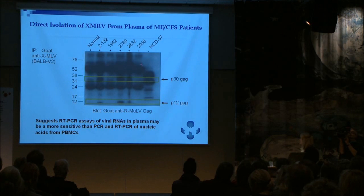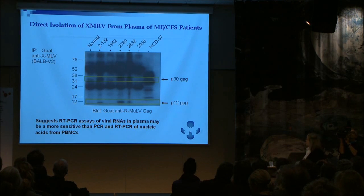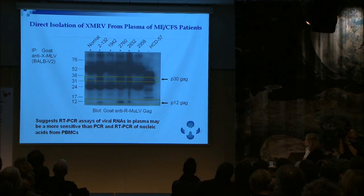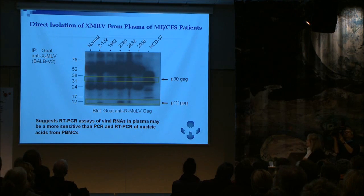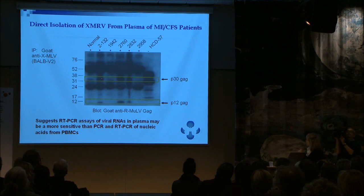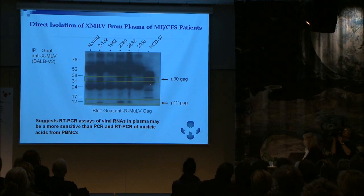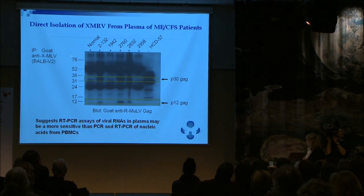We can also directly isolate XMRV from the plasma of CFS patients by immune precipitation. You take an antibody to the virus family member — in this case, a goat anti-XMLV from a bowel V2 mouse — and this antibody can directly bind the virus in the plasma, recognize it, pull it right out of the plasma, and then sequence it. We see P30GAG as well as P12 with this antibody.